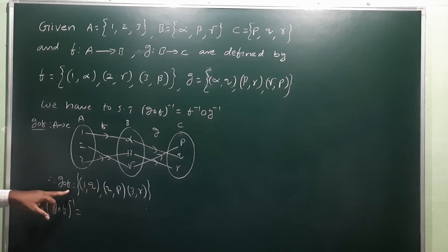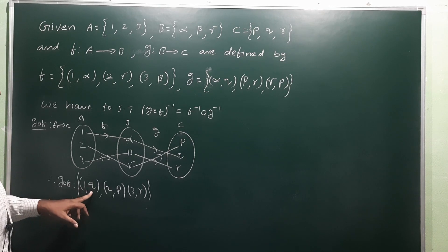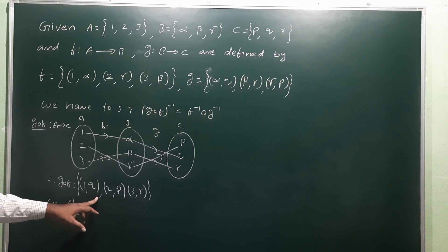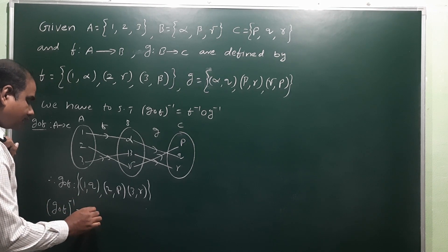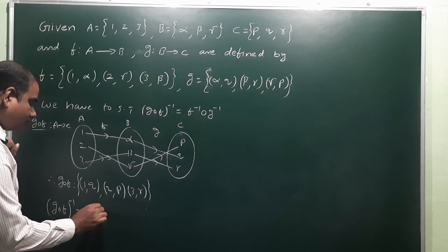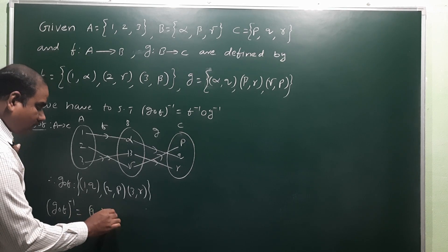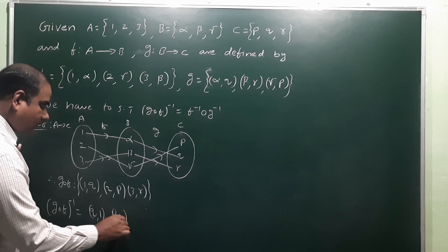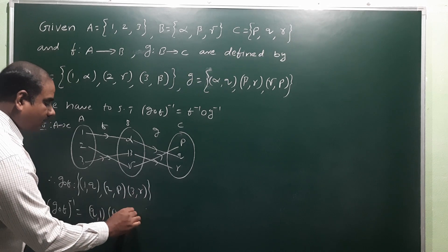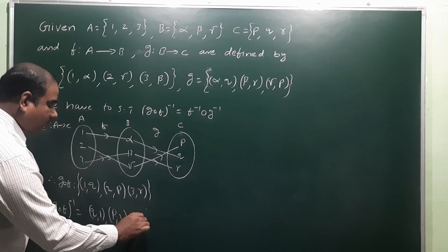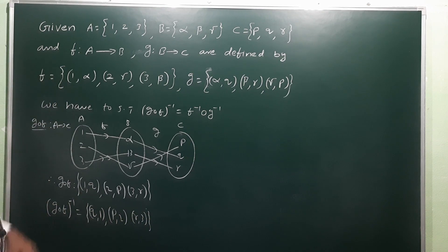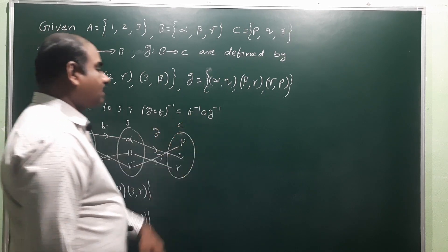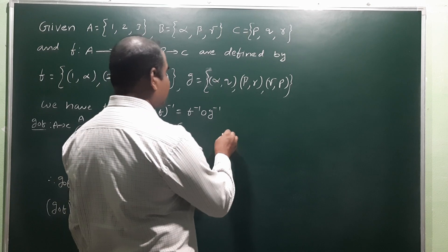Therefore (g∘f)⁻¹: inverse functions interchange the first and second coordinates. So (1,q) becomes (q,1); (2,p) becomes (p,2); (3,r) becomes (r,3). So (g∘f)⁻¹ = {(q,1), (p,2), (r,3)}. This is the LHS.